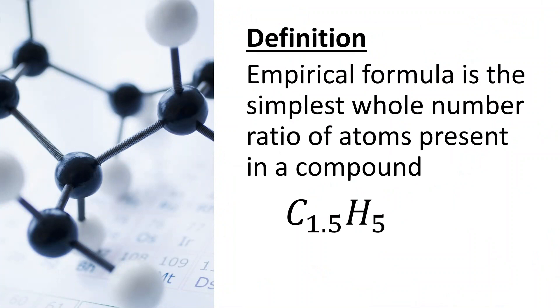So for example, C1.5H5, that is not an empirical formula because it's not a whole number. However, if we multiplied both by two, that would actually be the empirical formula, because we've got whole numbers, and then a ratio of three to ten, we cannot simplify that anymore.